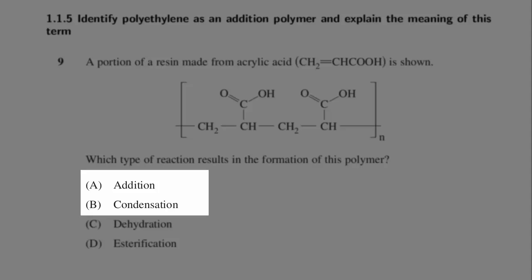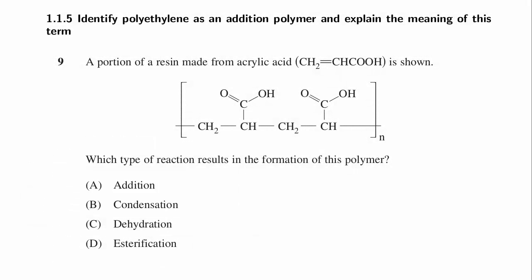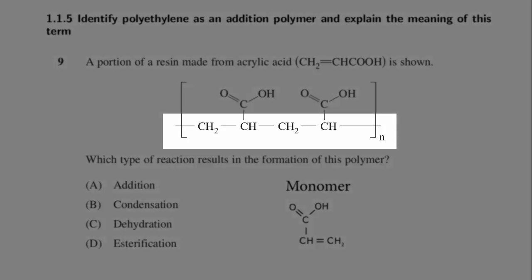We need to relate the monomer to the polymer and determine whether a carbon double bond is being broken, which is a key feature of an addition reaction, or whether a water molecule is being ejected from the structure. The quickest visual test is that a polymer formed by a condensation reaction will have oxygen atoms bridging between the original monomer molecules, whereas a polymer formed by an addition reaction will not.